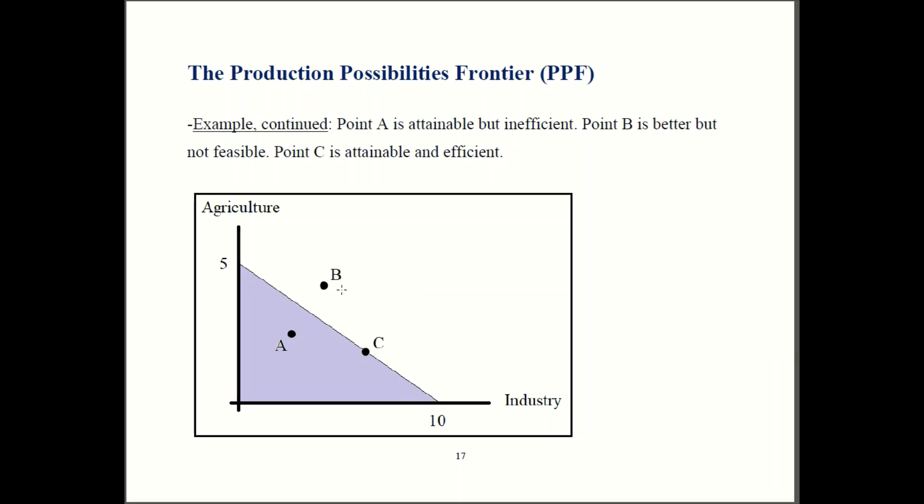Point B is not feasible because it's outside that frontier. Points A and C are both attainable. However we call point A inefficient. That's because we could be producing more of both. We could have both more agriculture and more industry. So for that point A we're not maximizing our potential. We could do better. So A is inefficient though it is attainable. C is both attainable and efficient. So points that are on the very edge of that frontier are efficient. Points that are inside the shaded area are inefficient.